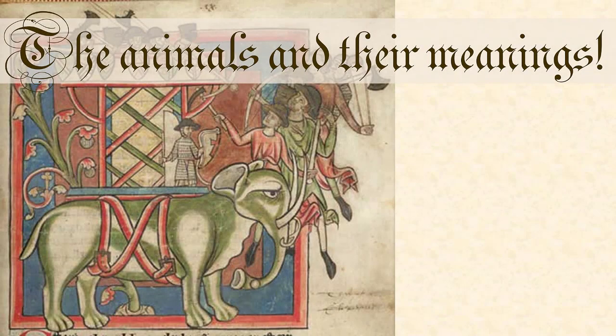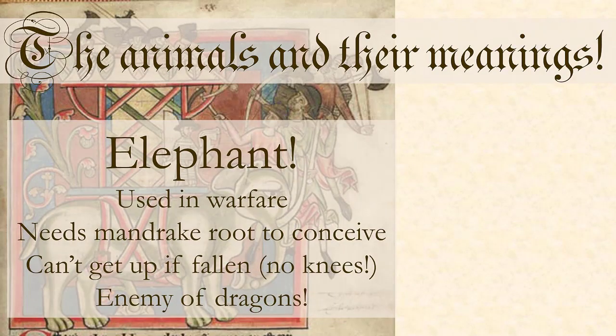One animal that gets a lot of space in bestiaries is the elephant. Elephants fascinated medieval people because most medieval Europeans had never seen one, yet elephants featured prominently in legendary stories — Alexander the Great was gifted elephants, and they appear in stories about the Roman Empire. So they understood what elephants were and where they lived, but had never seen them. Elephants were really cool because they were used in warfare; the belief was that castles were put on top of elephants for fighting.